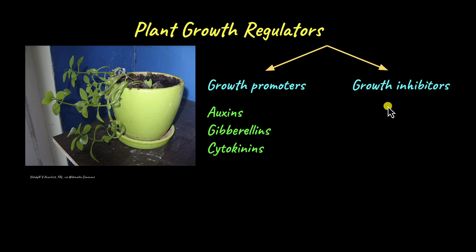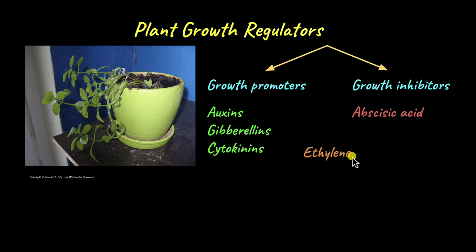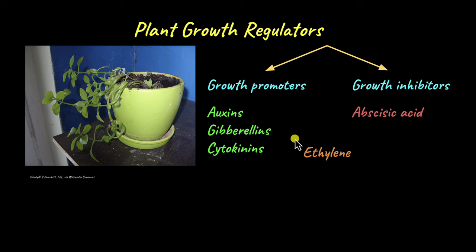In the category of growth inhibitors, we are going to see abscisic acid. And then we are going to talk about ethylene also, which sort of fits in both categories — it is a growth promoter as well as a growth inhibitor. In this video, we will focus on the growth promoters: auxins, gibberellins, and cytokinins. We will tackle abscisic acid and ethylene in a different video.